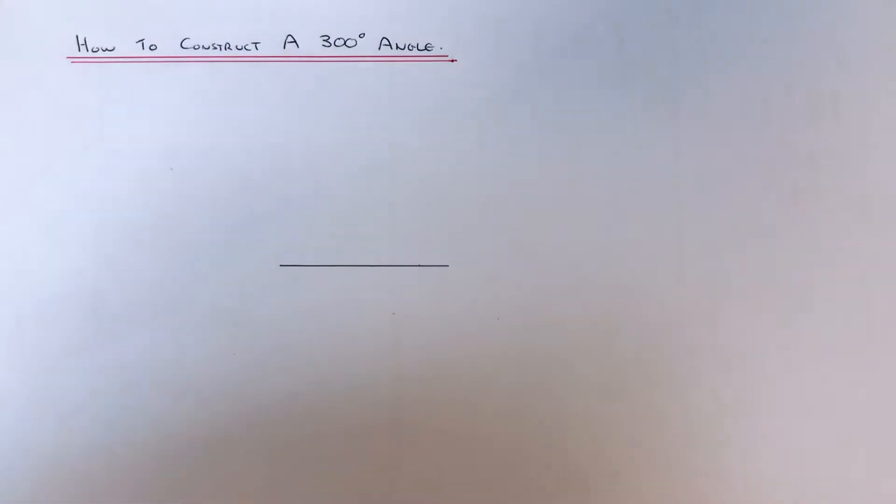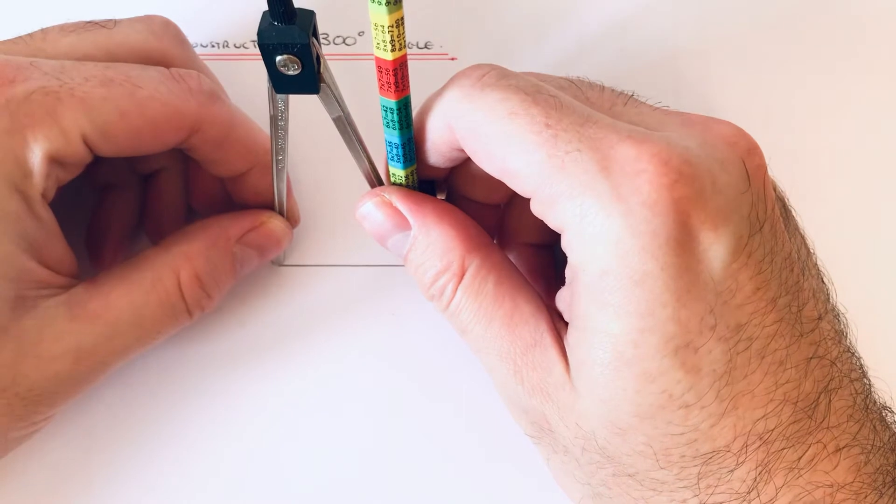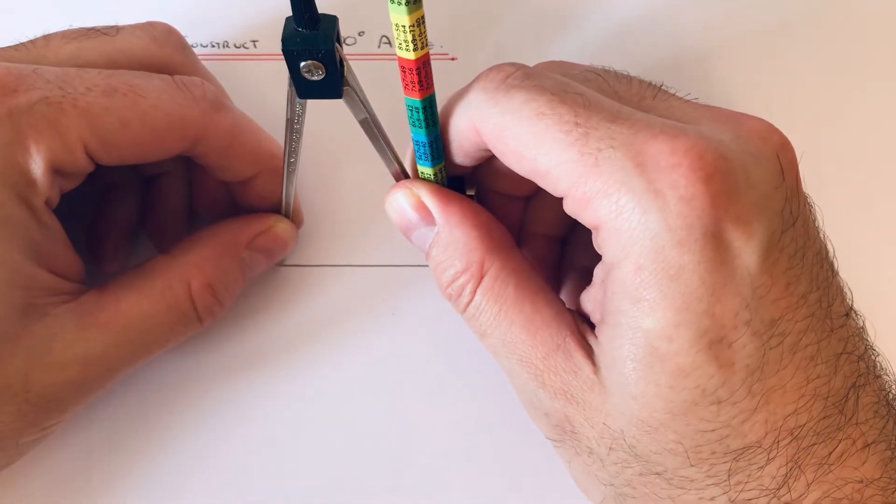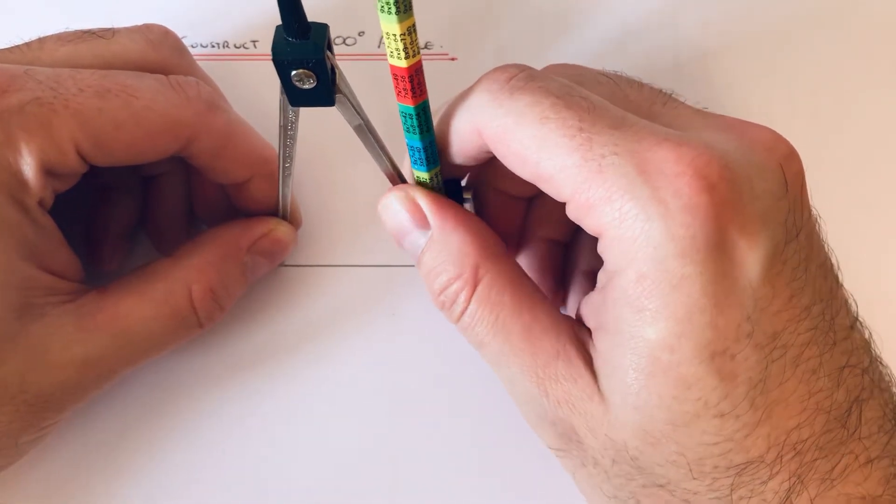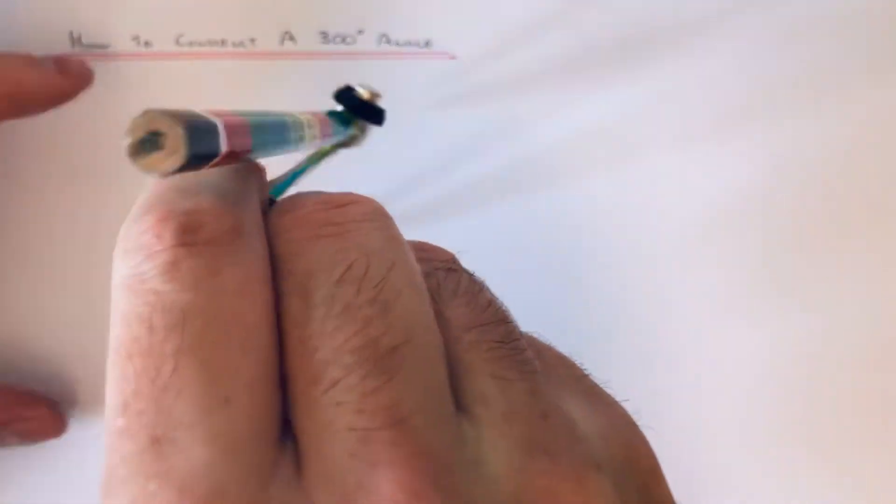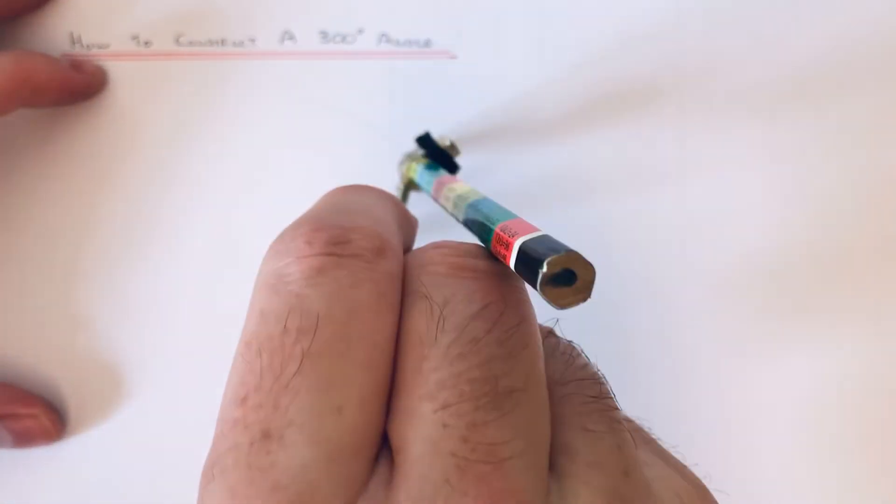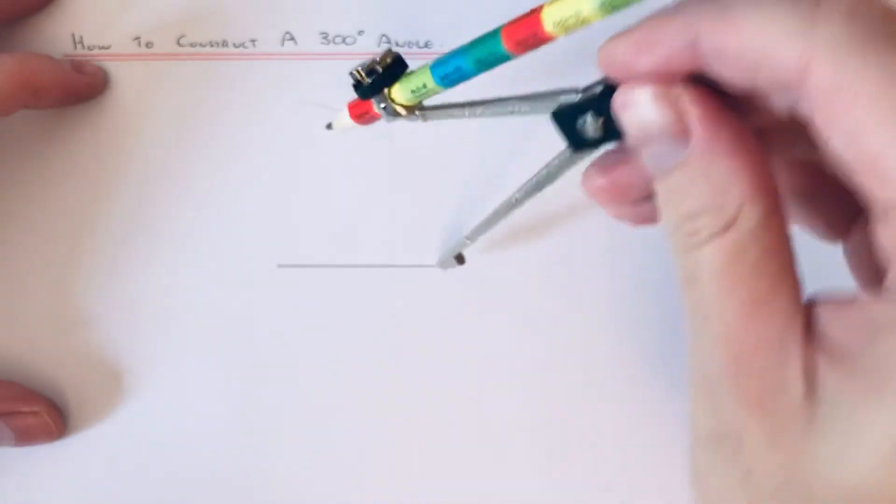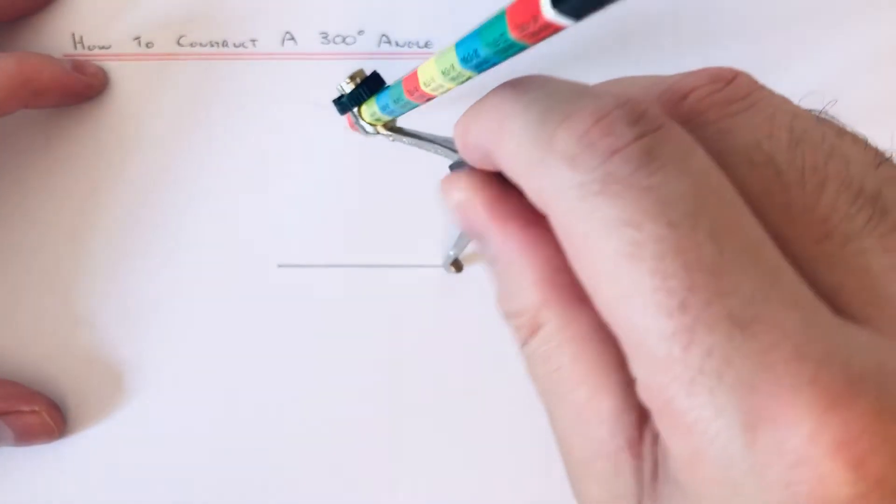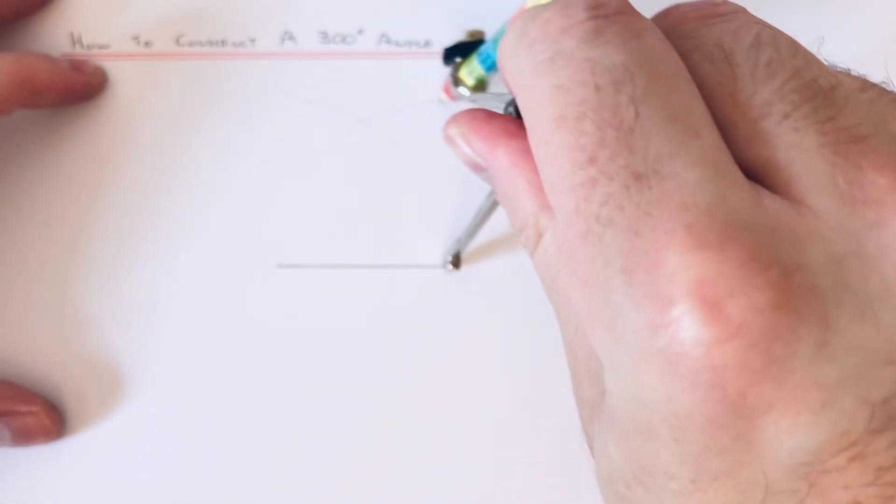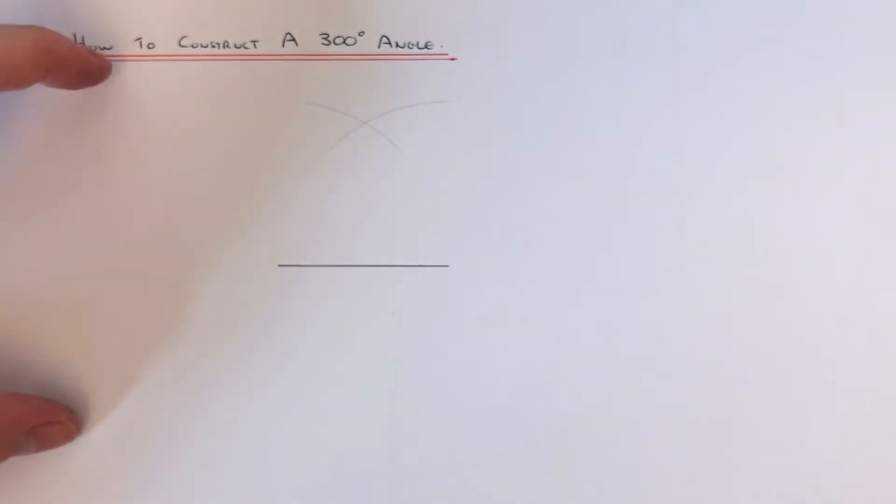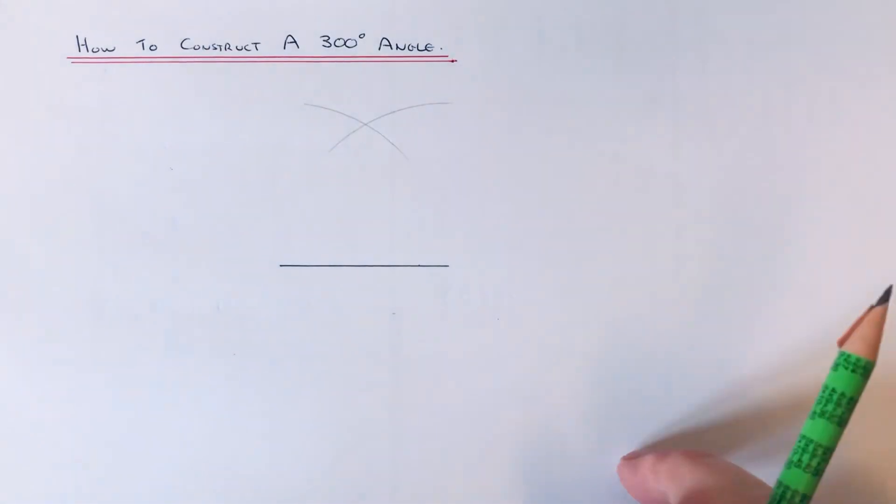Get your compass and open your compass the full length of the line. Then do an arc above the line from one side of the line, and the same on the other side.